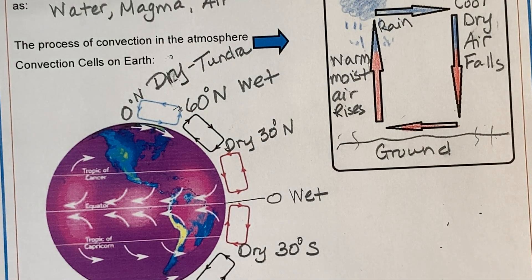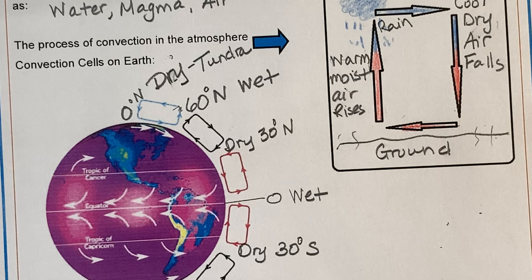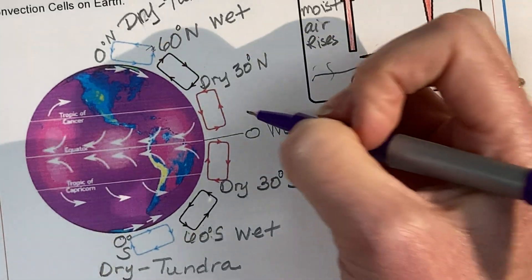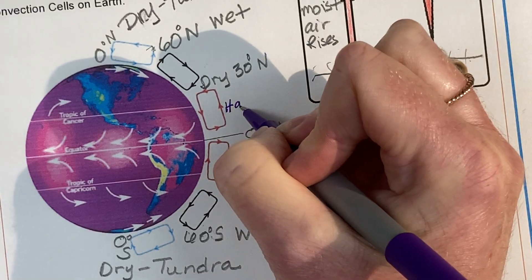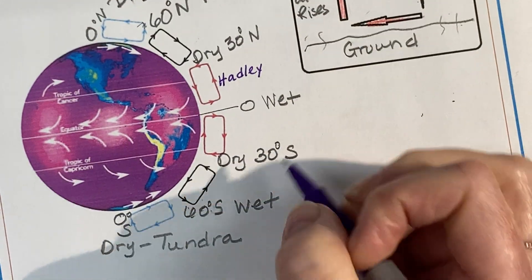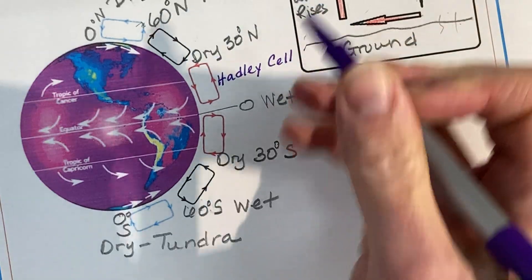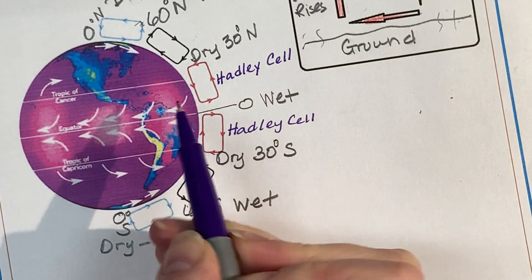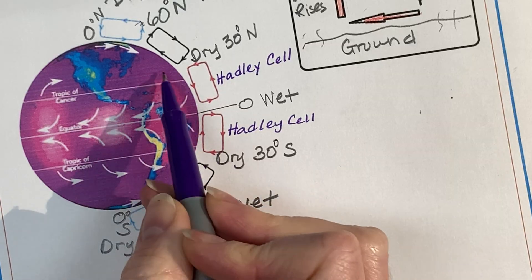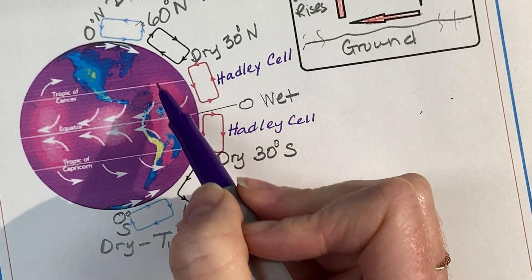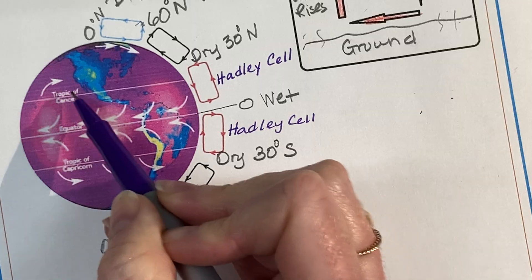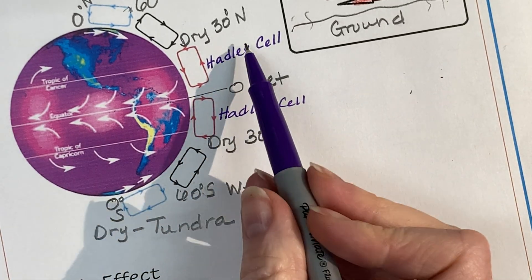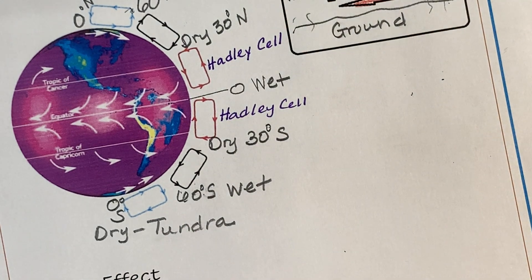We also need to know the names of these cells. The two cells that surround the equator are named Hadley cells. That's one, and this occurs all over the globe. It only shows it on this side of the globe, but it's all over the globe. Between 0 and 30 degrees north and 0 and 30 degrees south, we have Hadley cells.